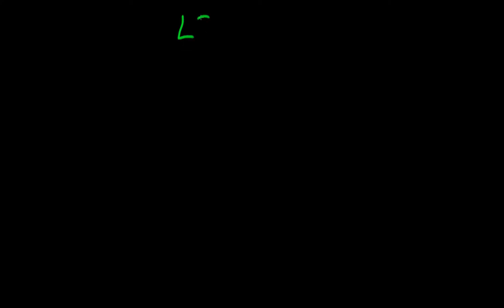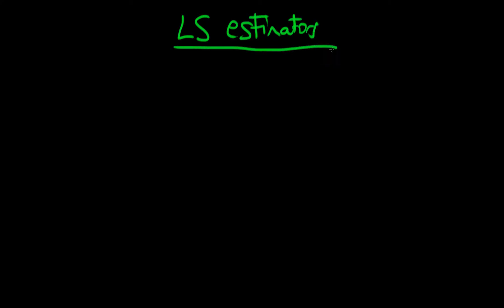In this video we're going to derive the explicit form of the least squares estimators — or at least we're going to start to — when we're thinking about the matrix form of econometrics.